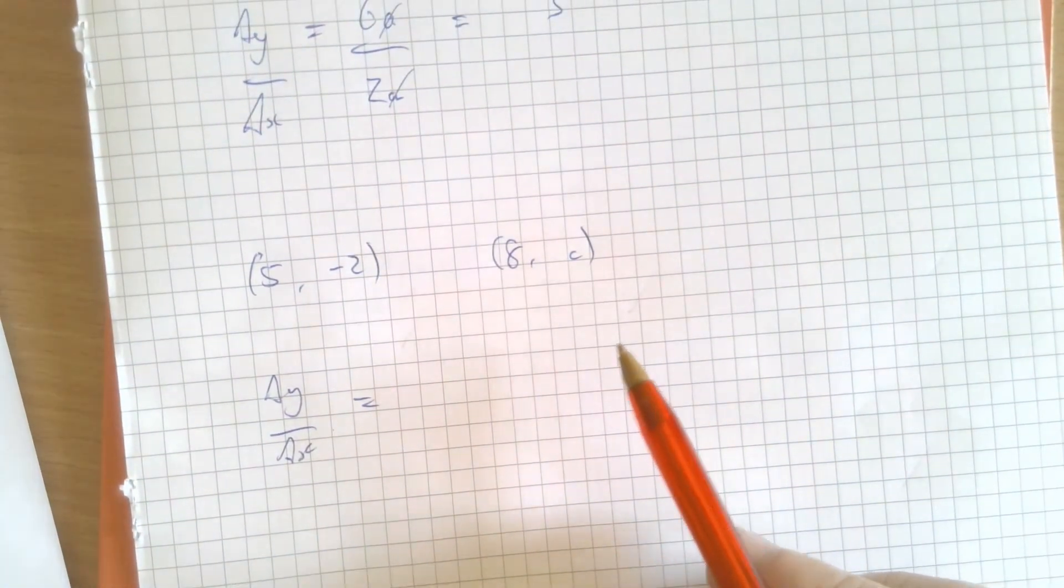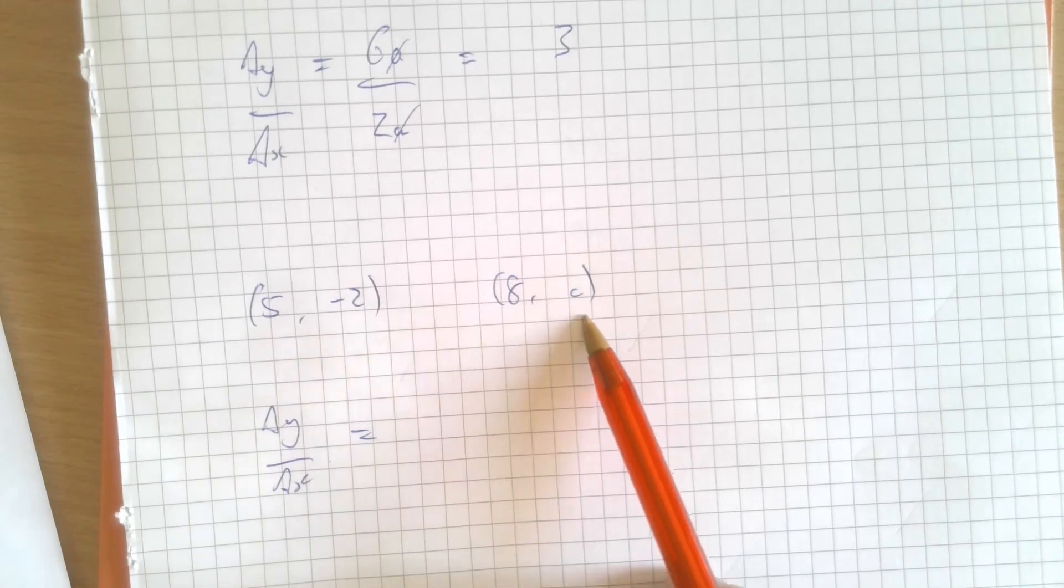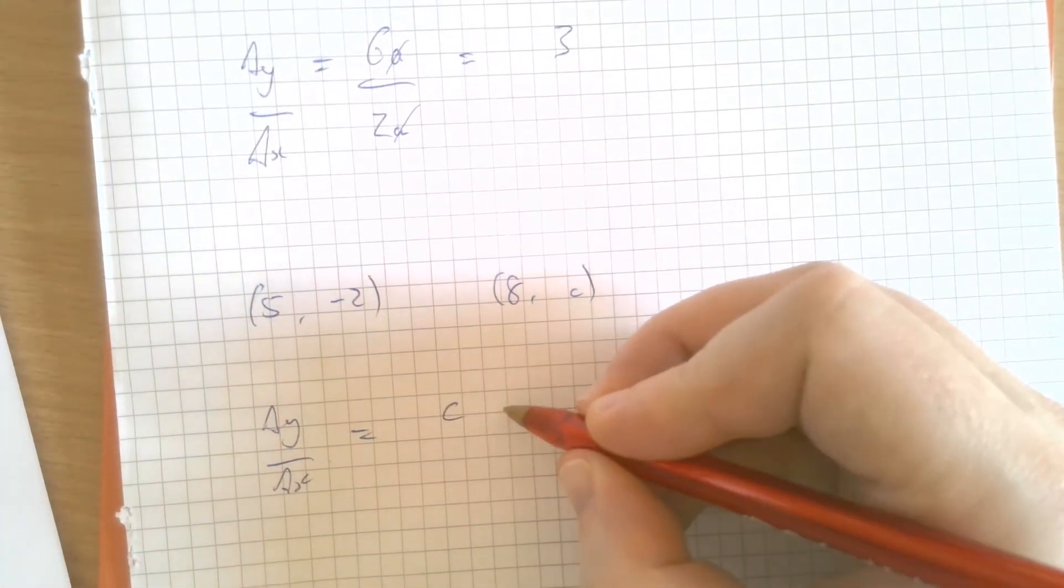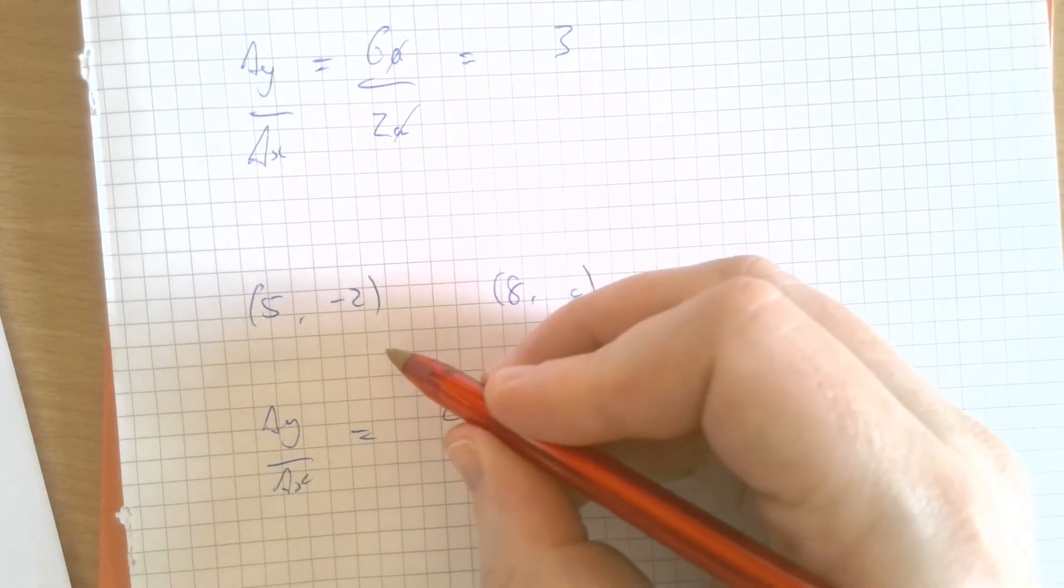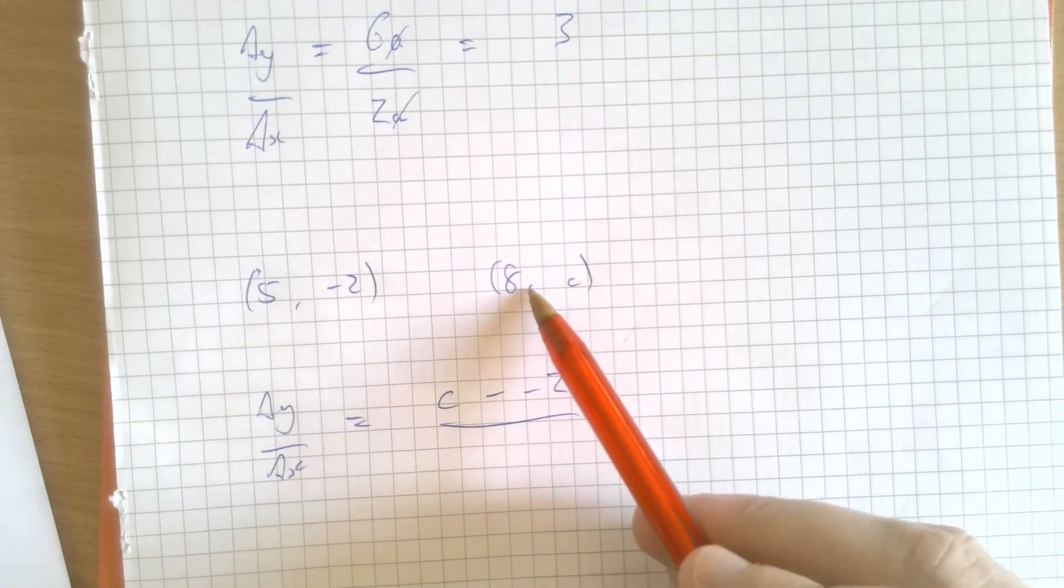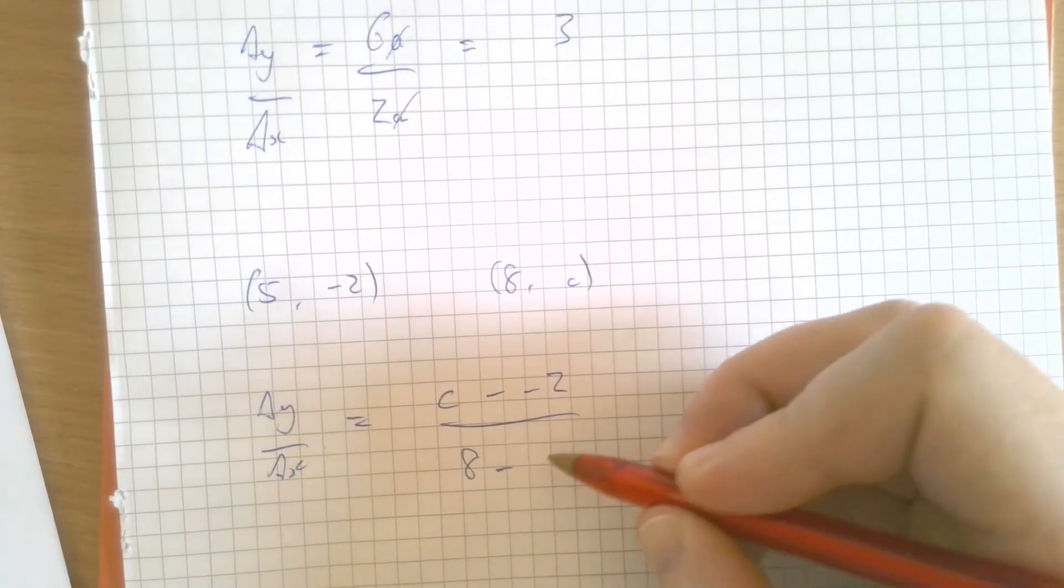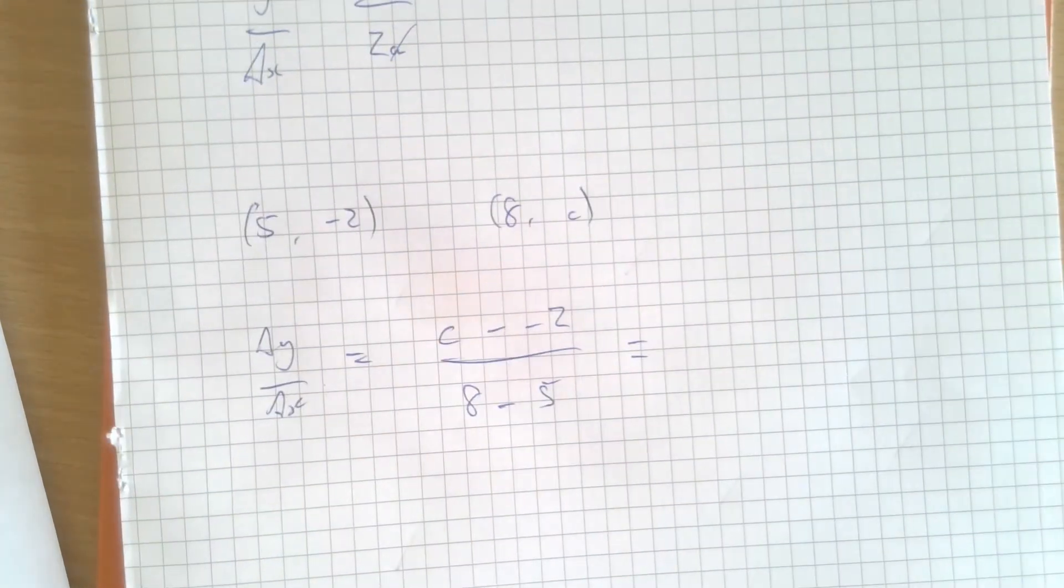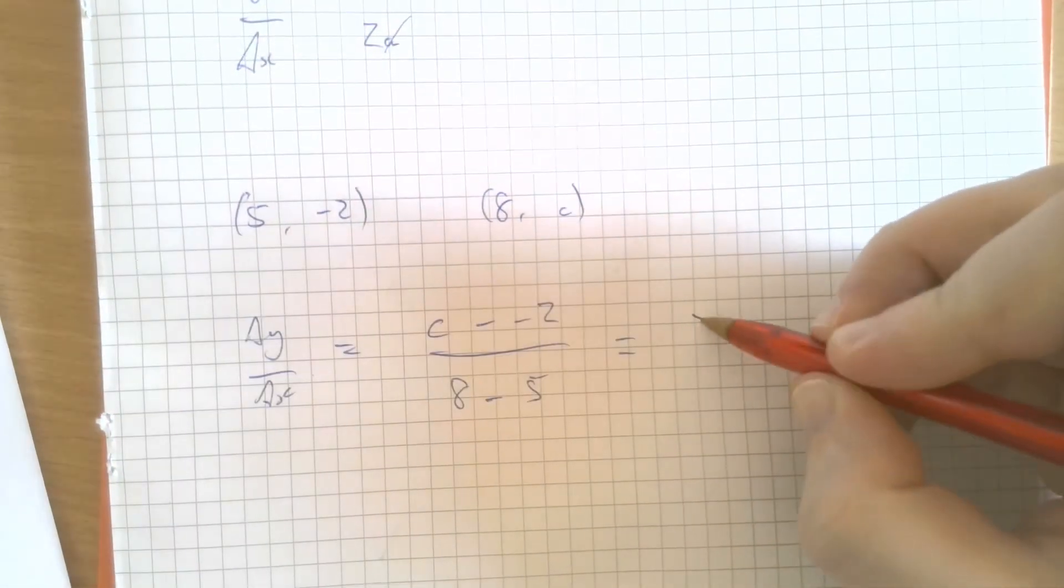It's the difference between this number here and this number here. So, it's c minus -2. That's the difference between the two. And then the difference between the x's is 8 minus 5. That's what's happening when we're finding the difference. And then we're told in the question that the answer to this is 3.